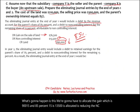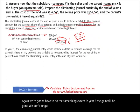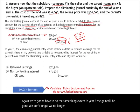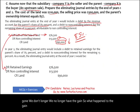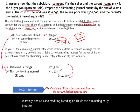In year two, we do the same thing except the gain is gone — it has moved into retained earnings and NCI. So the eliminating entry becomes: debit retained earnings, debit NCI, and credit land. We keep doing this every year until the land is sold to an outsider.